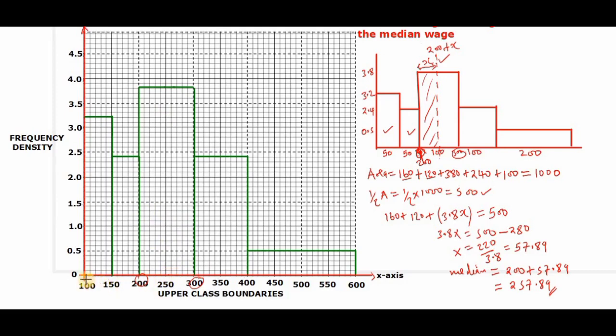So we know that one small square represents 10, because from here up to here we have 50, and there are 5 small squares, so that means one small square is 10. So if we already have at this particular point 250, then 257.89 should lie in between.